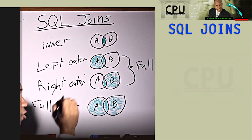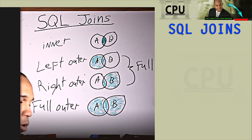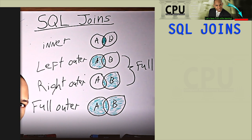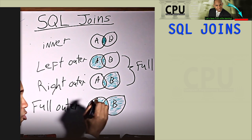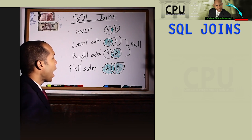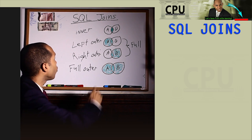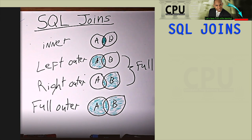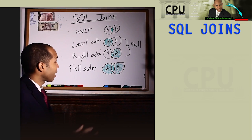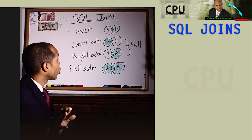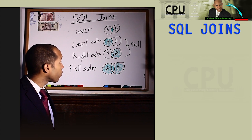Bottom line is, every single row from table A and every single row from table B we will see in this full outer join. So again, to review, you have these four basic types of joins. Not saying these are all the joins — these are just the joins that I'm covering in this video.